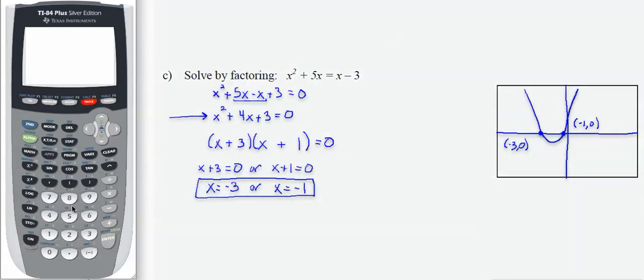Second calc 5 intersect process. First equation, second equation, guess. And I get my intersection of negative 1, 0. So the solution of x equals negative 1 checks.